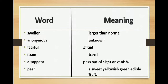Now, word meanings. Swollen — larger than normal. Anonymous — unknown. Fearful — afraid. Roam — travel. Disappear — pass out of sight or vanish. Pear — a sweet yellowish-green edible fruit.